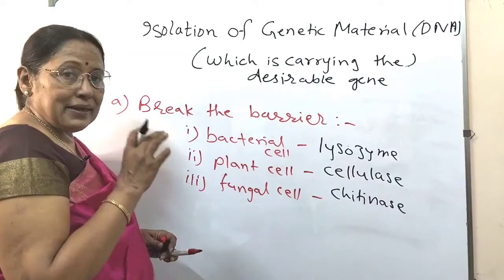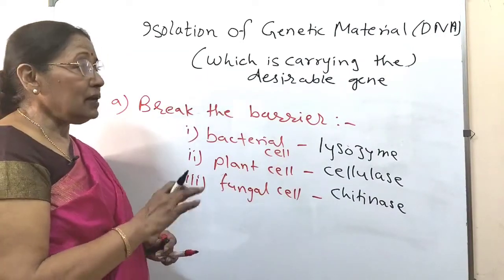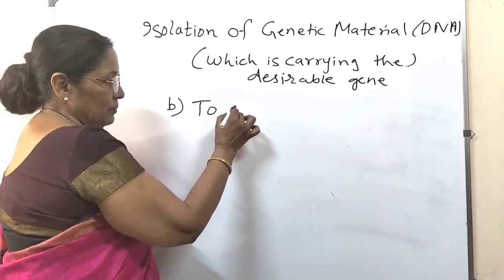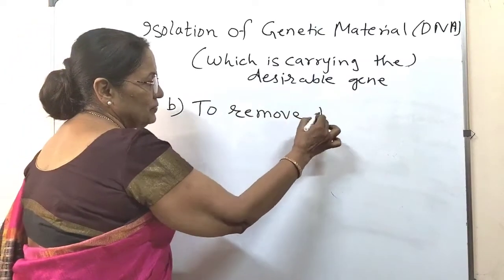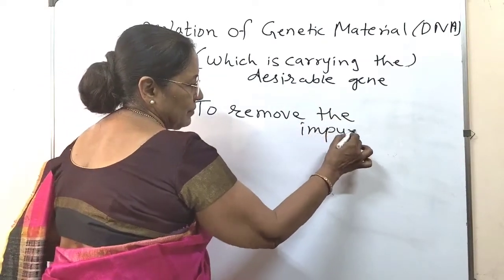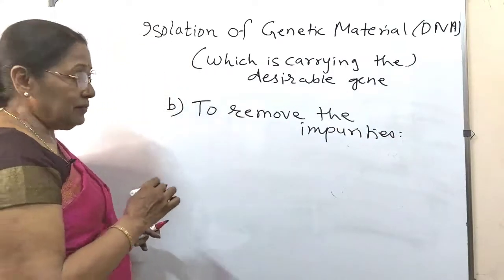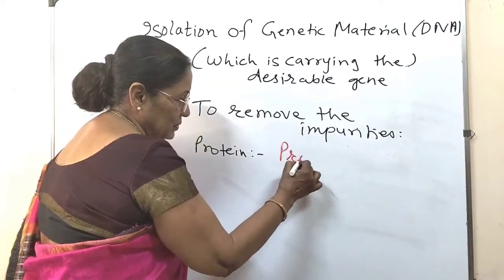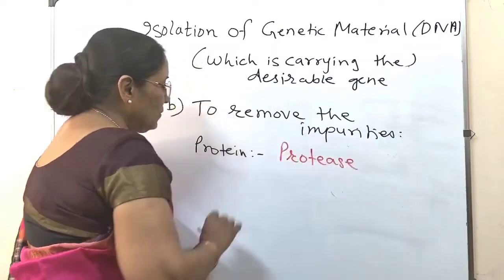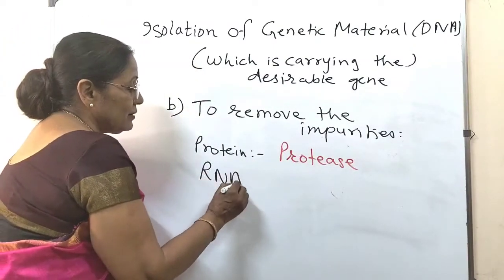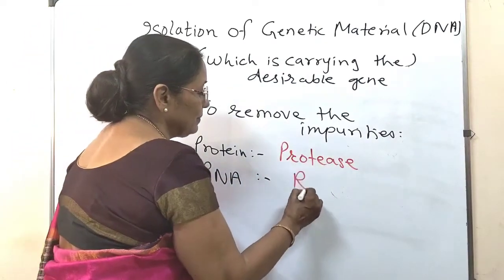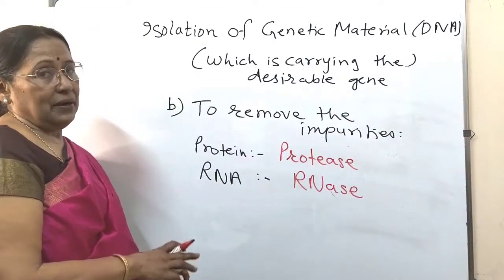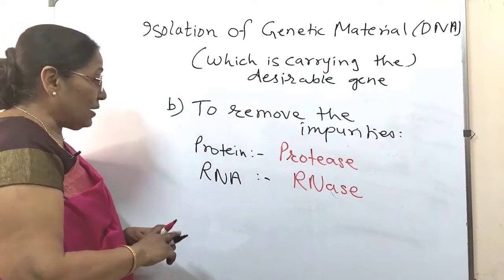When the barriers are dissolved, we obtain the DNA, which is associated with many types of impurities. To remove these impurities: to remove proteins, we use protease; to remove RNA, we use RNAase. All other impurities associated with the DNA are removed in this purification step.